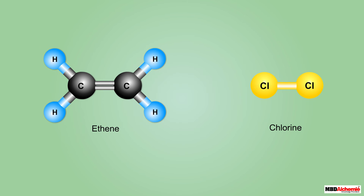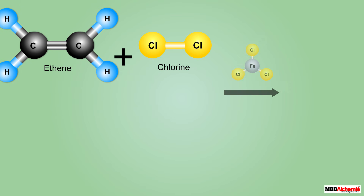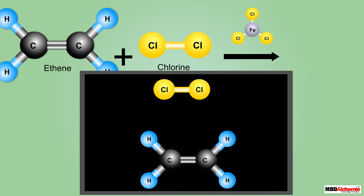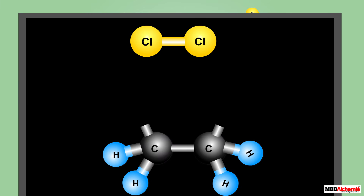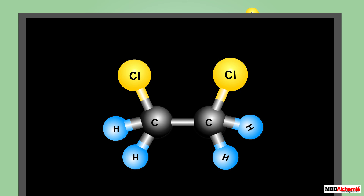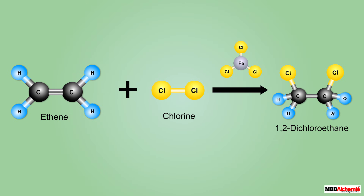Let us see what happens when these two compounds react with chlorine under suitable conditions. The presence of the double bond makes ethene quite reactive. When we add chlorine to ethene in the presence of ferric chloride, the double bond of ethene breaks partially, and the two carbon atoms each combine with one chlorine atom, thereby completing their valency.